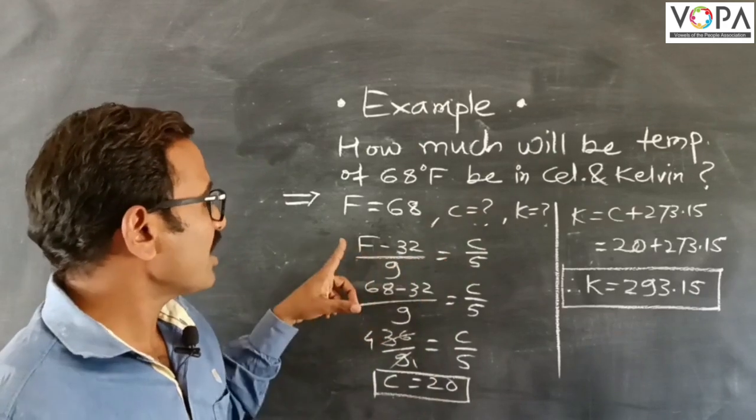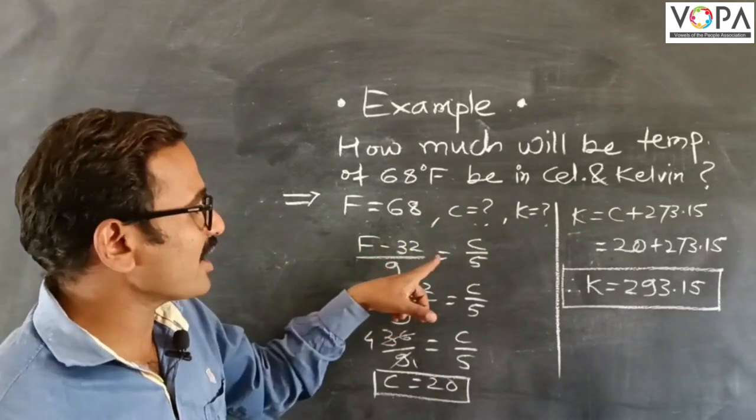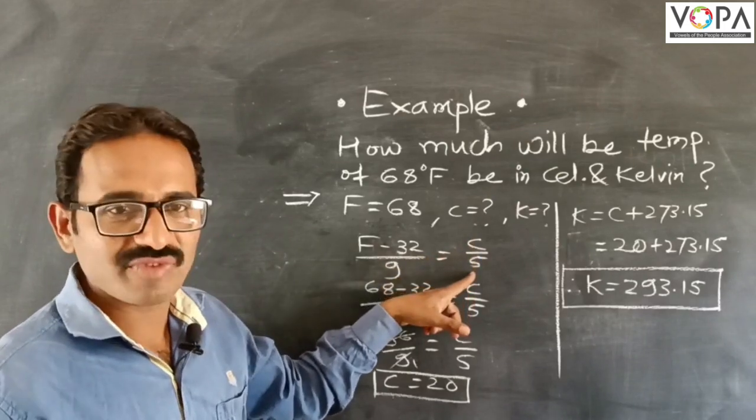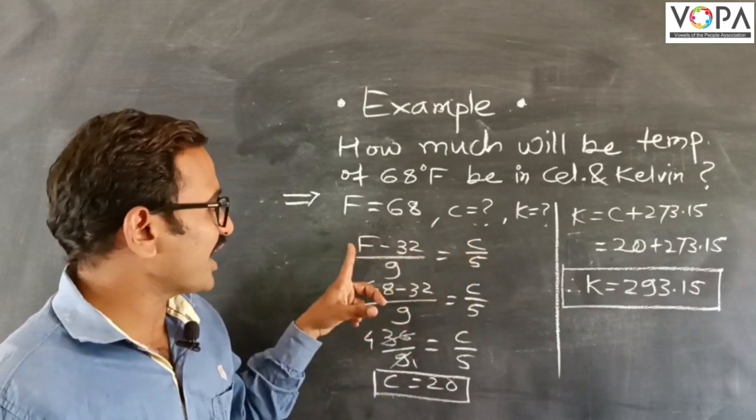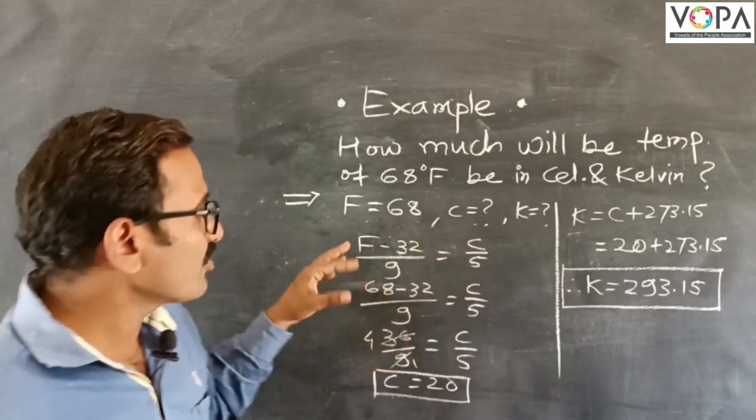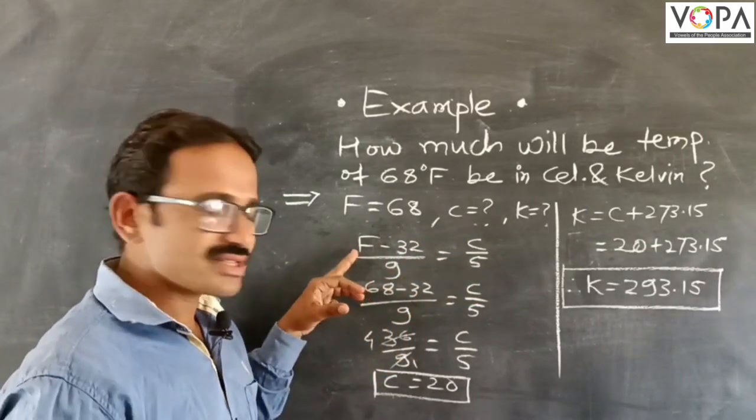We have the formula: F minus 32 divided by 9 is equal to C divided by 5. This is the formula relating Fahrenheit and degree Celsius. Here we have the value of F is 68.